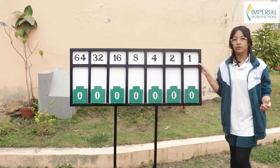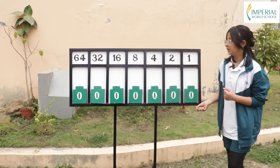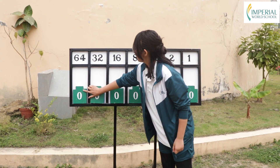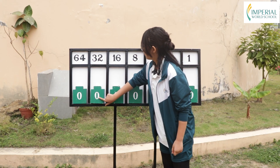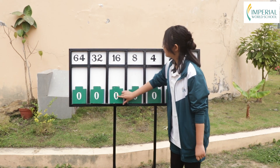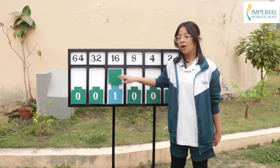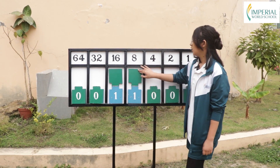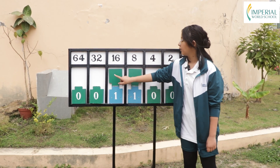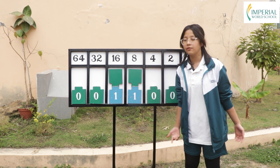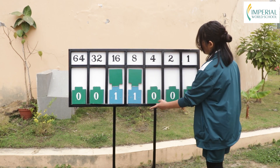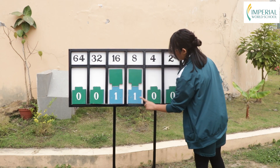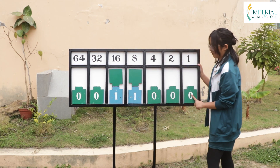Let's take 24 for an example. 24 does not have 64, not 32, but it does have 1 sixteen and it also has 1 eight. When you add 16 and 8 it is 24. So the decimal 24's binary term is 1 1 0 0 0 0.